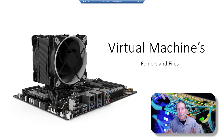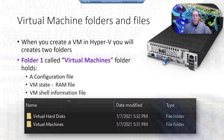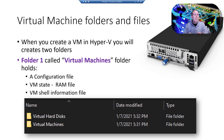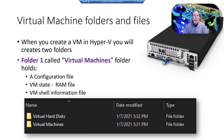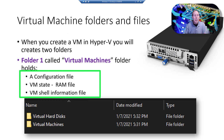Let's start by looking at virtual machine files and folders. Whenever we create a virtual machine, we create two folders. One is called the Virtual Hard Disk folder, and the other one is called the Virtual Machine folder. In the Virtual Machine folder, there's a series of files — one is a configuration file.